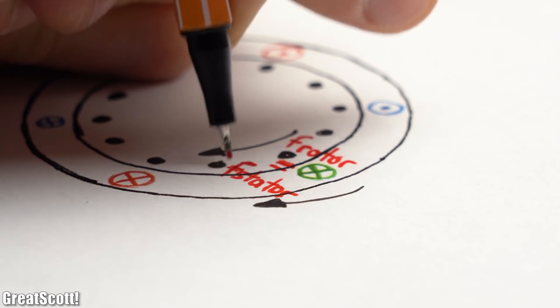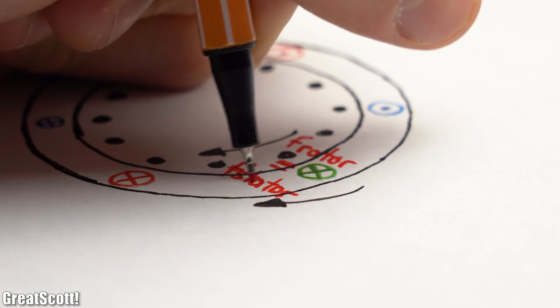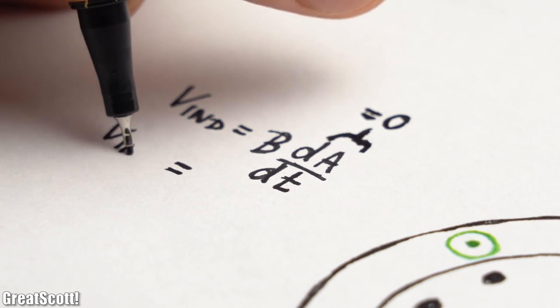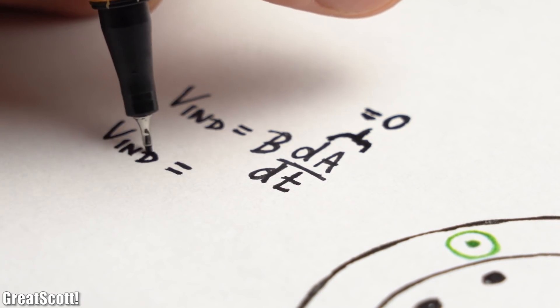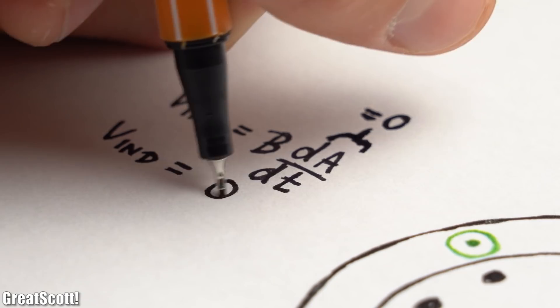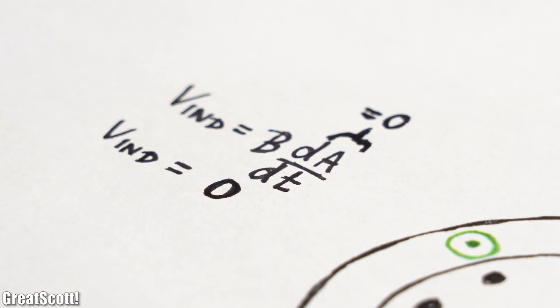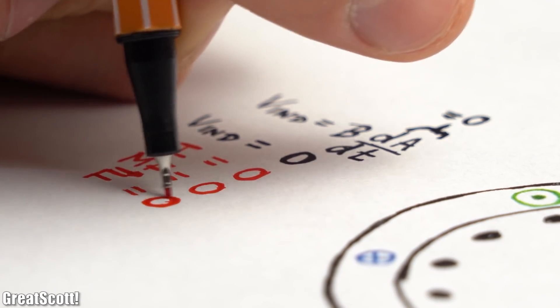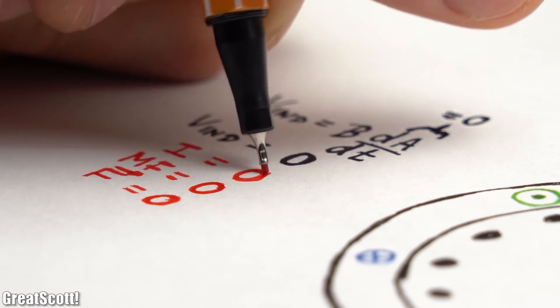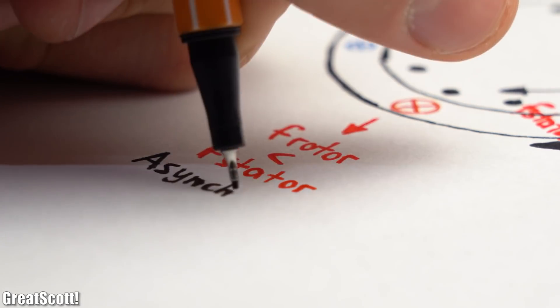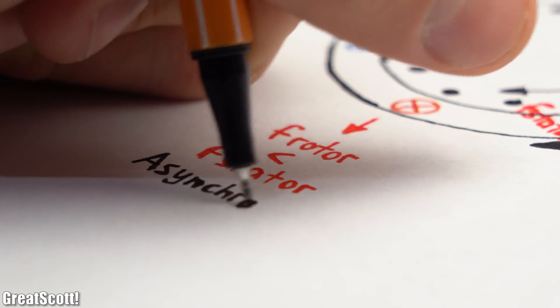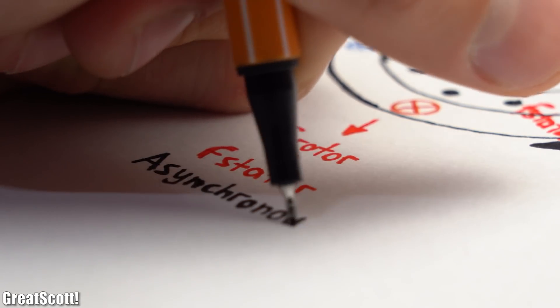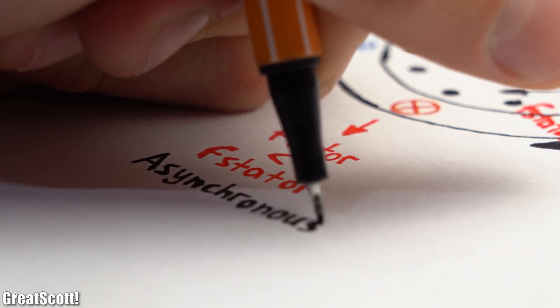Well let's imagine the rotor and stator would spin with the exact same frequency. The problem is that in this case according to the induction law no voltage would be induced into the rotor and thus no current would flow and no opposing forces would be created which means no rotating. So it is pretty logical that the rotor must turn a bit slower than the stator frequency which is also why this motor type is called asynchronous.